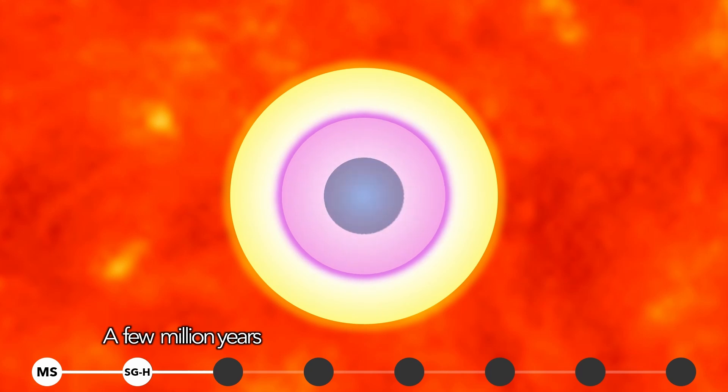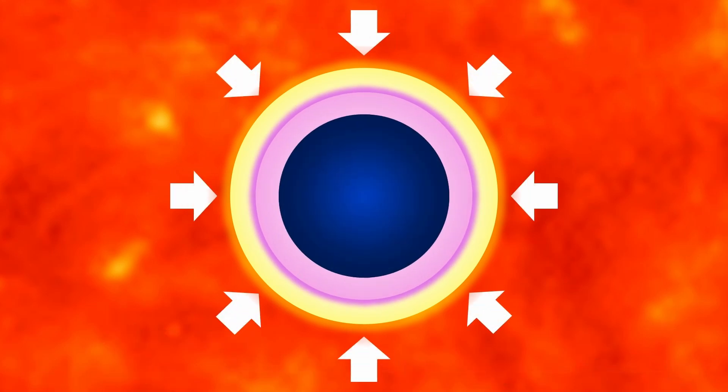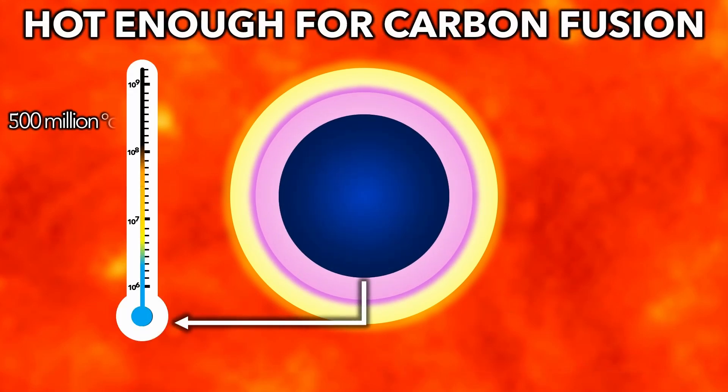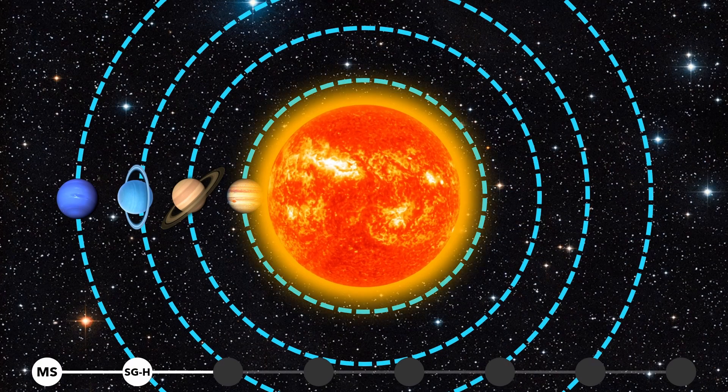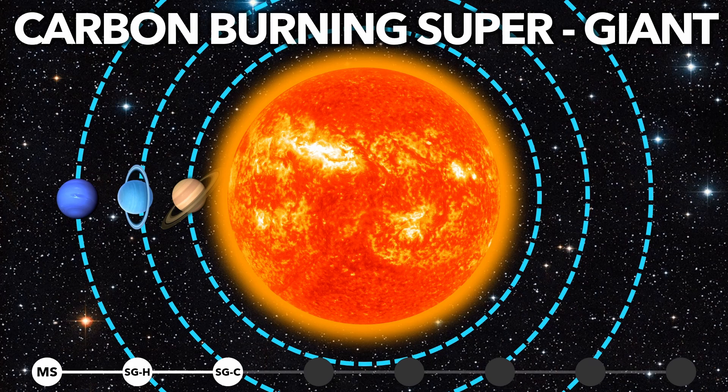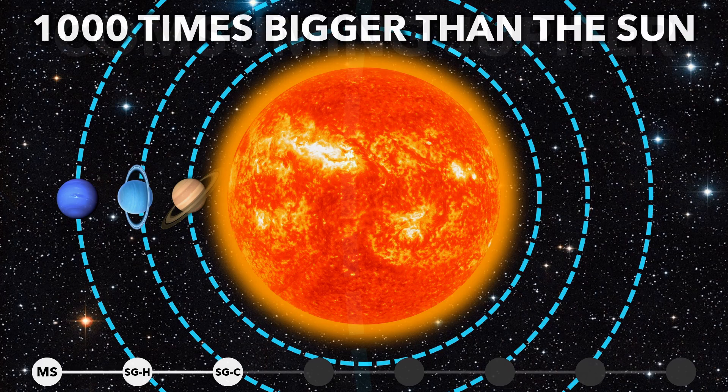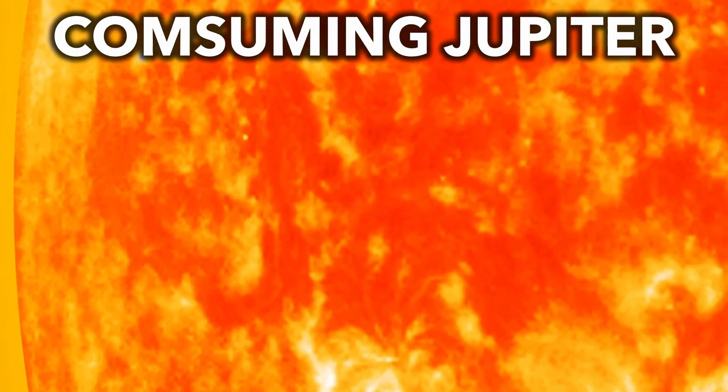Over a few million years, carbon ash builds up in the core. But the higher pressure means the core does get hot enough to fuse carbon into neon. The extra fusion makes the star grow even bigger as a carbon burning supergiant. At 1000 times the Sun's radius, it would even engulf Jupiter.